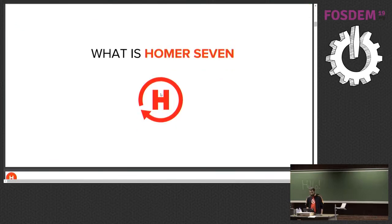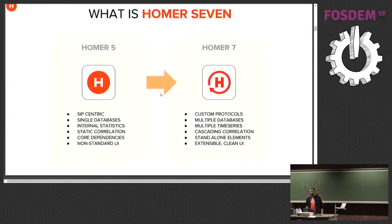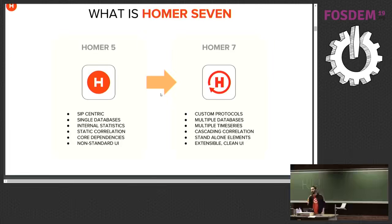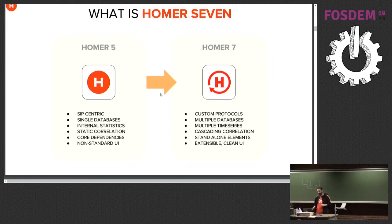Homer 7 is really an evolution of the project which tries to get rid of some of our design limitations and open the doors to whatever is coming next. We don't want to make the same mistakes again. So we dropped being SIP-centric, we dropped being tied to specific databases, we dropped our internal way of doing statistics, and we dropped the way we were doing correlation. We basically threw it all away.